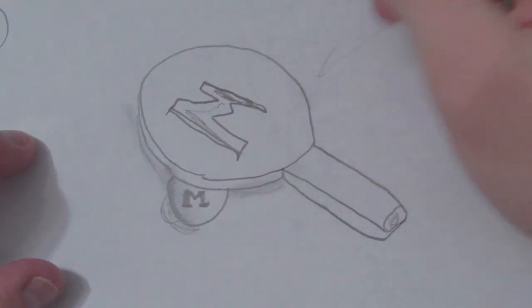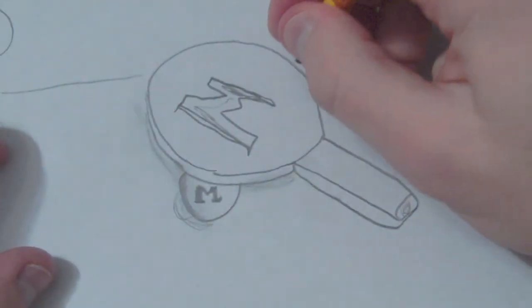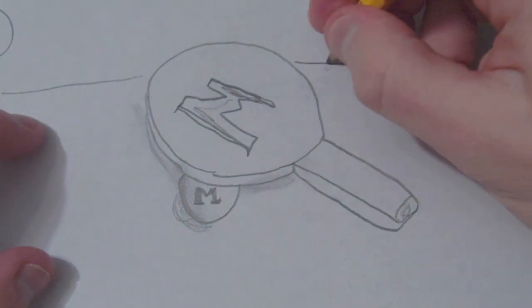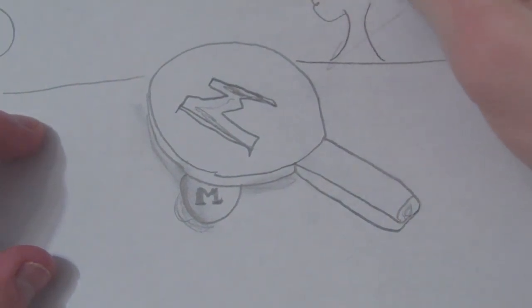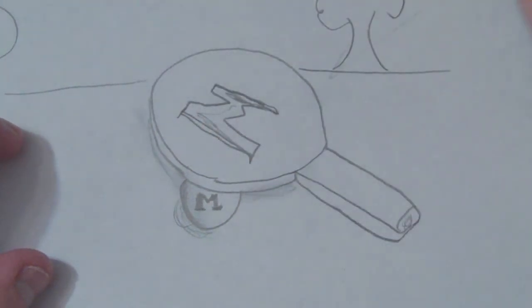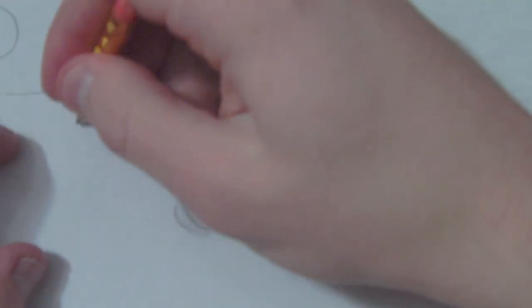And there you have a table tennis racket and its ball. And then just draw a background. Draw a nice little tree back here. Maybe they're outside. They're playing next to a fire hydrant.